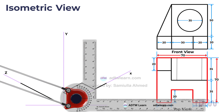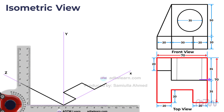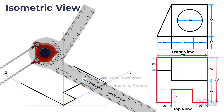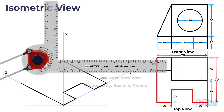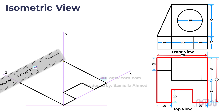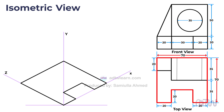We notice that the total length of the object is 70 millimeters. Therefore, draw a 70 millimeters line from the endpoint of the previous line parallel to the z-axis. Then draw another 20 millimeters line parallel to the z-axis, followed by a 20 millimeters line parallel to the x-axis. Finally, connect the endpoints of both lines to form the complete outline of the top view.